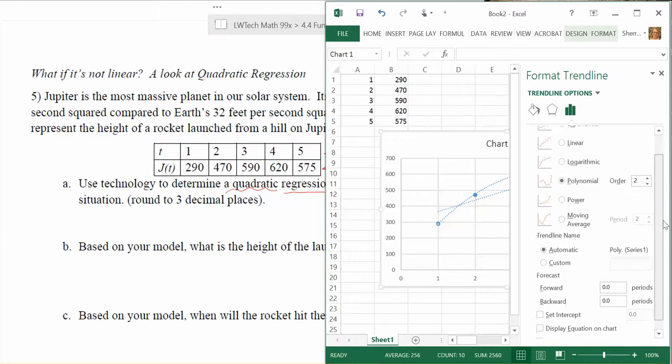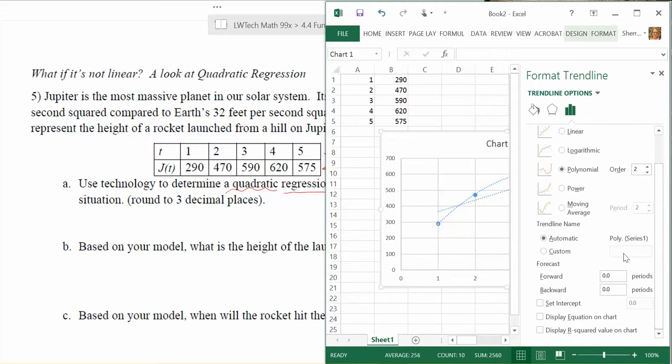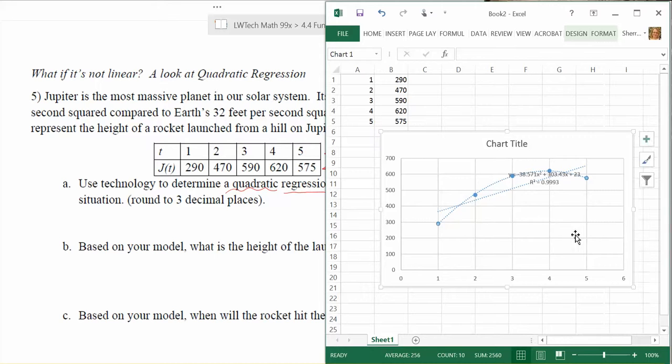Let's scroll down a little bit. Just like before, we want to make sure we display the equation on the chart. That's what we're interested in finding, the equation of best fit. It's also a nice idea to put the r squared value on the chart. This will work very similarly to what we saw with linear. Once you've got those marked, we'll close this.